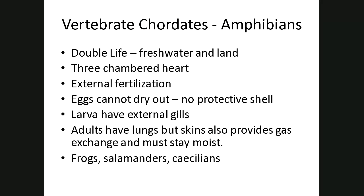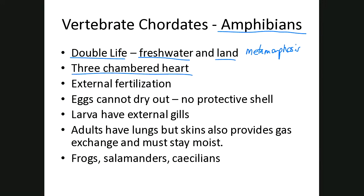We move up to amphibians. 'Amphibian' means double life — they can live in freshwater but also have a period of time where they live on land, and they go through metamorphosis from the larva stage to the adult, which is also the two lives. These organisms have a three-chambered heart for better circulation. Most have external fertilization, and they lay eggs, but their eggs cannot dry out — they have no protective shell, so they have to be near water.